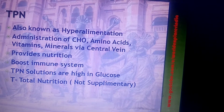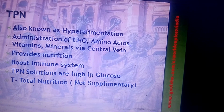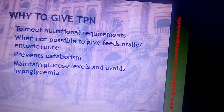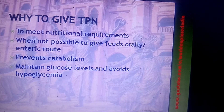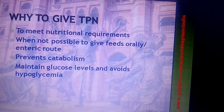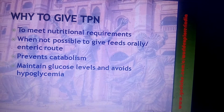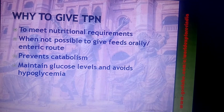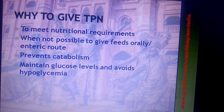TPN is usually given to provide total nutrition to the patient — it is not supplemental nutrition. We give TPN to meet the nutritional requirements when it is not possible to give feeds orally or by enteral route. It prevents catabolism, maintains glucose levels, and avoids hypoglycemia in the patient.